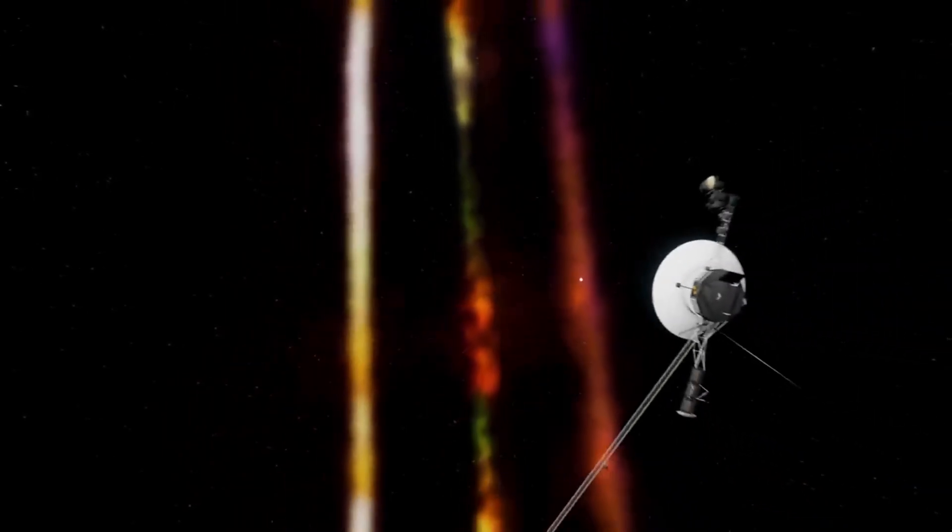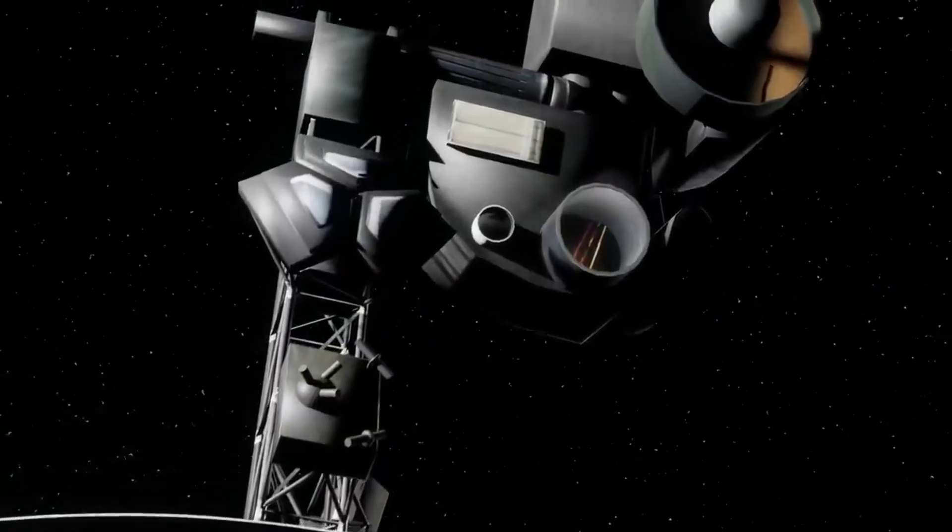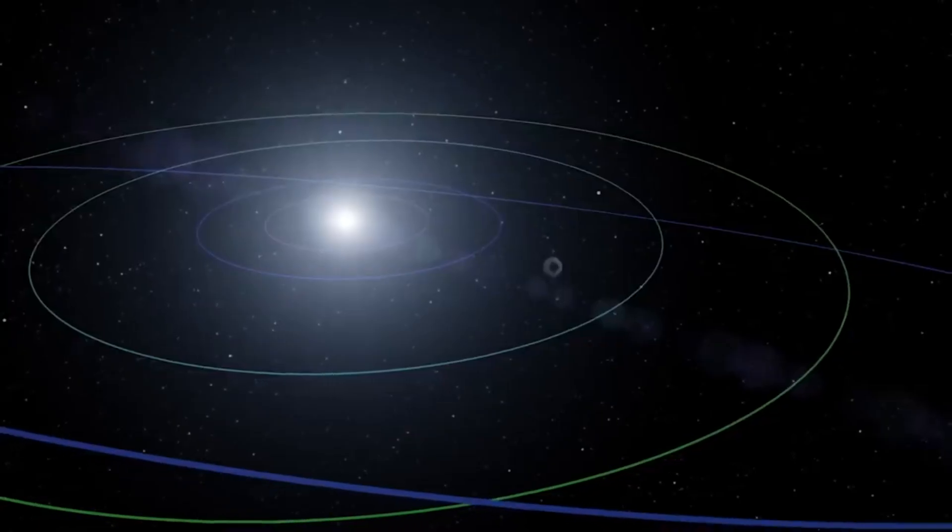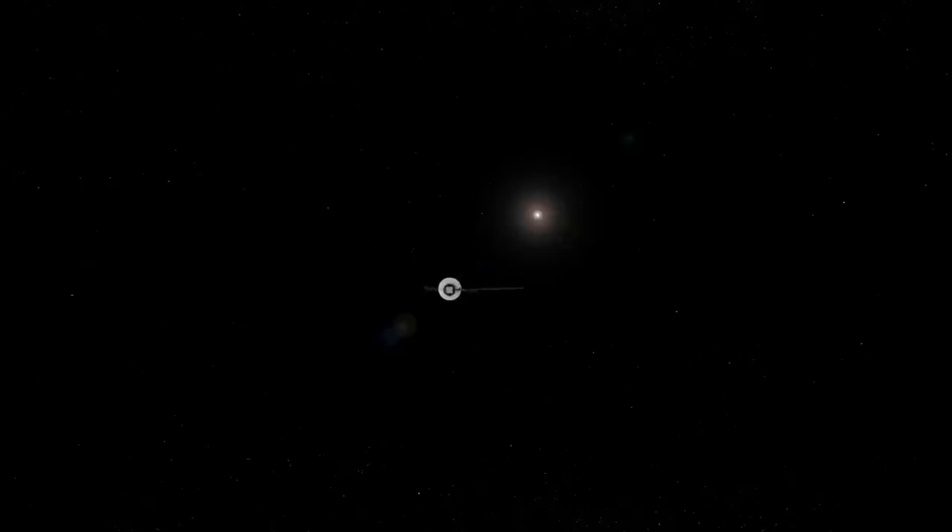But why hasn't Voyager's cameras been active for more than three decades? We must consider Voyager 1's location at the time of its most recent image in order to respond to this. The famous photo of the pale blue dot was obtained from a location 6 billion kilometers away from Earth. The spacecraft was now so far away that everything looked like a tiny dot.